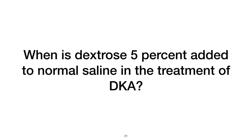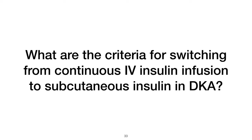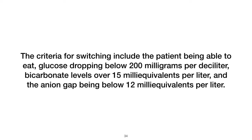When is dextrose 5% added to normal saline in the treatment of DKA? Dextrose 5% is added when the serum glucose level is less than or equal to 200 mg per deciliter. The criteria for switching from continuous IV insulin infusion to subcutaneous insulin include the patient being able to eat, glucose dropping below 200 mg per deciliter, bicarbonate levels over 15 mEq per liter, and the anion gap being below 12 mEq per liter.